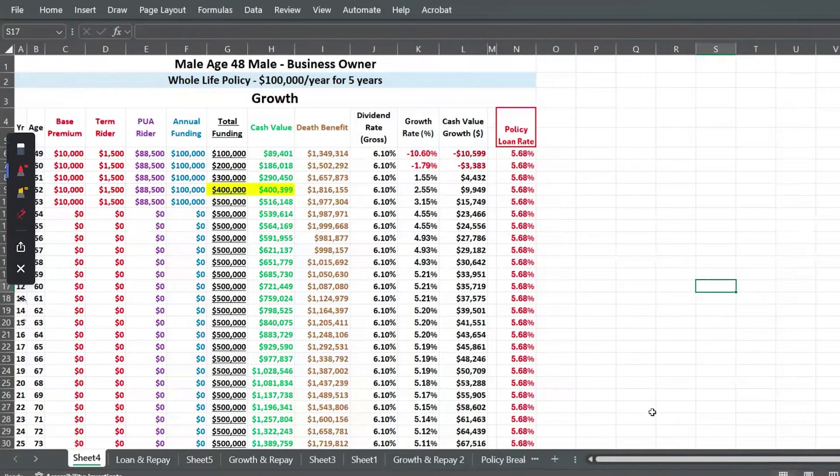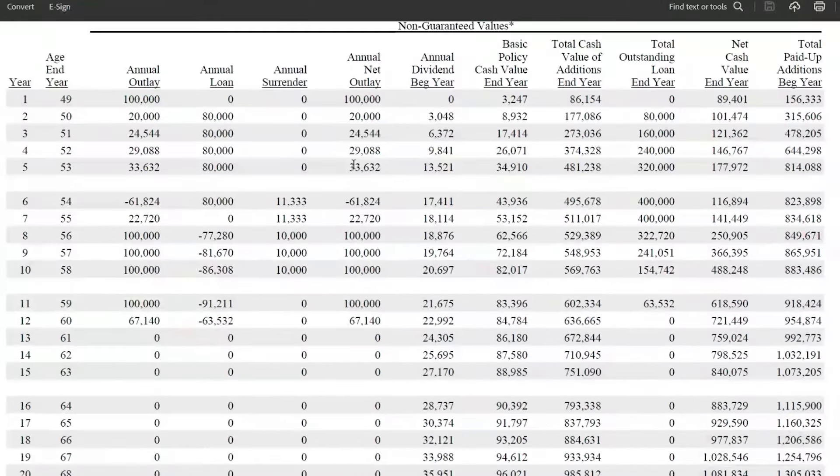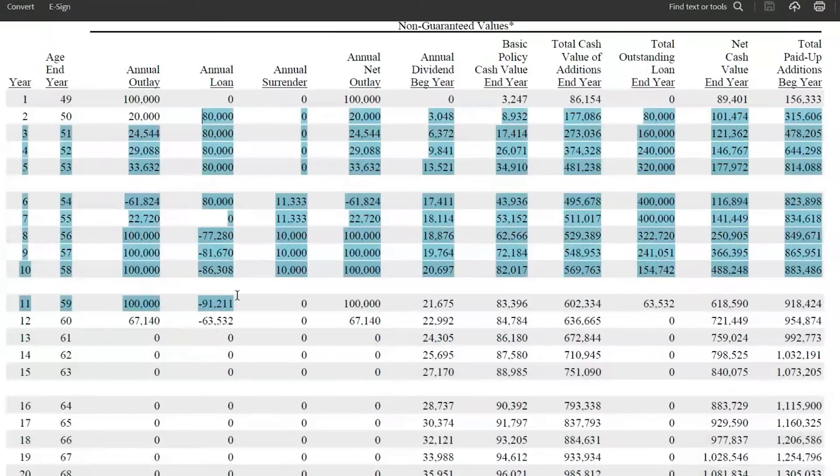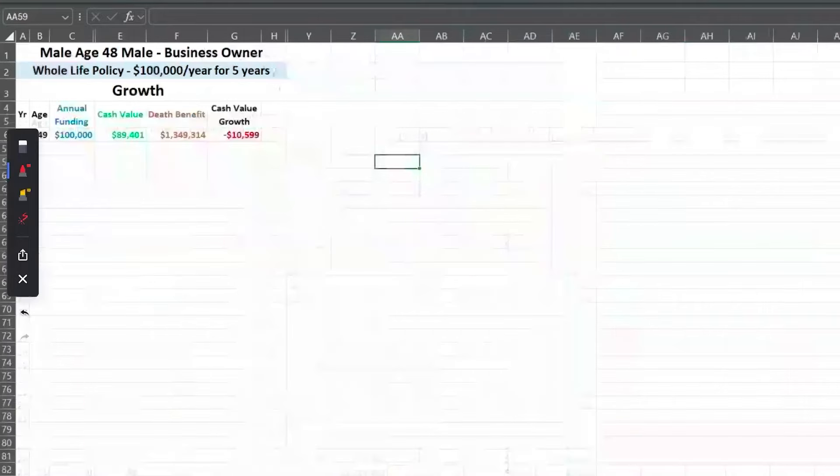So let's look at the loan model and this we also pulled from the illustration. So when we prepare these illustrations we look at loans coming out and such, these can be really wacky, but look at age 60: your cash value is $721,000. Keep that number in mind. All right here we go.